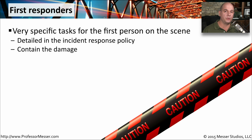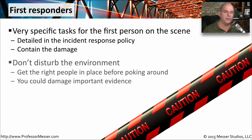When you're thinking about business risk, one of the things you have to consider is what you do when an incident occurs. One of the most important people that responds to an incident is the one that gets there first. That first responder will have some very specific roles tasked to them, usually documented in your incident response policy. One of the roles of the first responder is to limit the amount of damage in a particular incident — whether at a technological level or even a physical level — so there will be some type of perimeter around the incident. But the first responder also has to be very careful not to damage anything, as there may be important evidence inside that incident area.